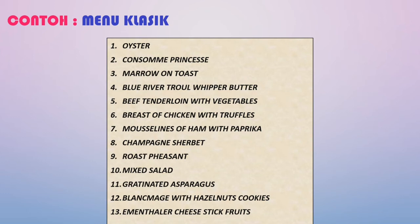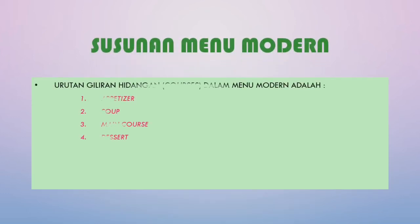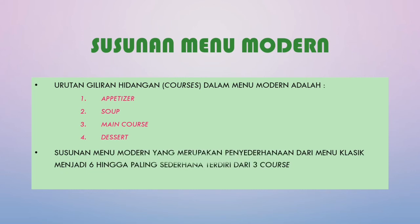Selanjutnya kita akan mempelajari susunan menu modern. Urutan giliran hidangan atau cours dalam menu modern adalah appetizer, soup, main course, and dessert. Susunan menu modern merupakan penyederhanaan dari menu klasik, dari 13 giliran menjadi 6, kemudian menjadi 4, dan disederhanakan menjadi 3 cours atau 3 giliran hidangan.